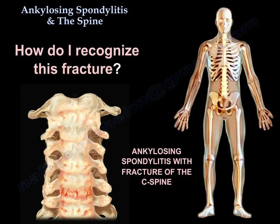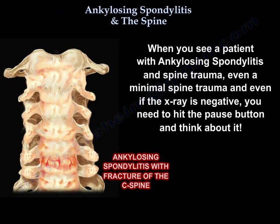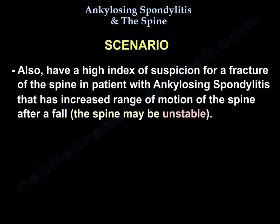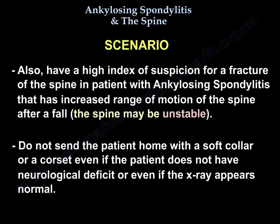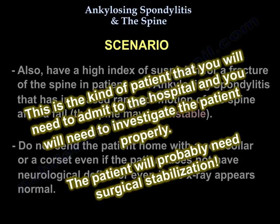When you see a patient with ankylosing spondylitis and spine trauma — even minimal spine trauma, even if the x-ray is negative — you need to hit the pause button and think about it. Have a high index of suspicion for a fracture of the spine, especially if there is increased range of motion after a fall. That spine may be unstable. Don't send the patient home with a soft collar or corset, even without neurological deficit and even if the x-ray appears normal. This patient needs to be admitted to the hospital, properly investigated, and will probably need surgical stabilization.